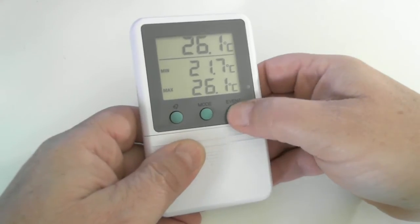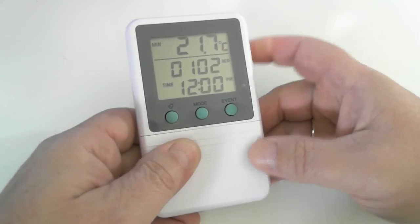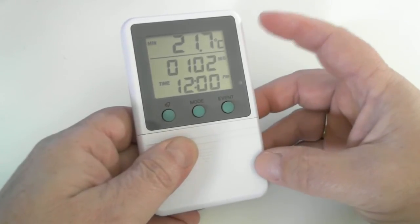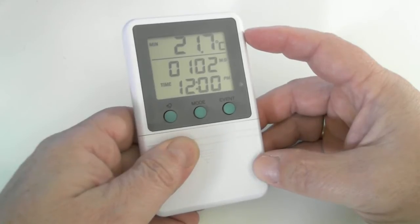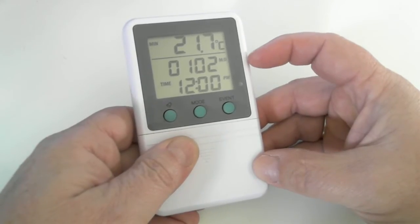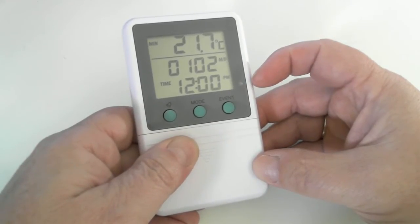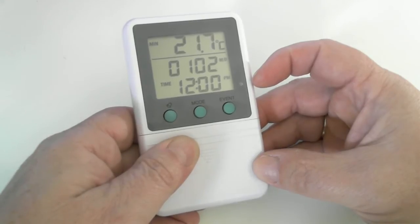If we hit the event button we will get when these events have happened. At the top we have the minimum temperature recorded with the month and day in the center of the screen and the time at the bottom of the screen of when the occurrence happened.